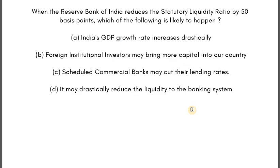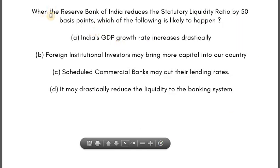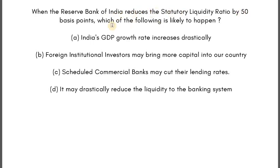Next question: when the Reserve Bank of India reduces the Statutory Liquidity Ratio by 50 basis points, which of the following is likely to happen? Options are: India's GDP growth rate increases drastically; foreign institutional investors may bring more capital into the country; scheduled commercial banks may cut their lending rates; or it may drastically reduce liquidity to the banking system.